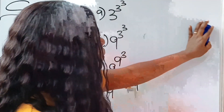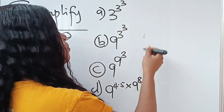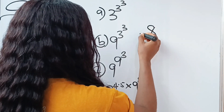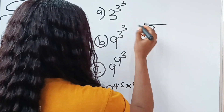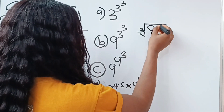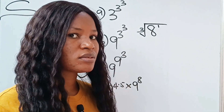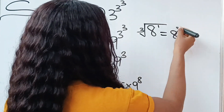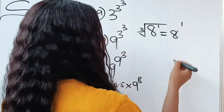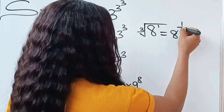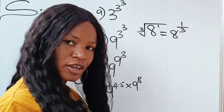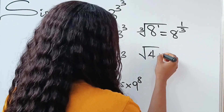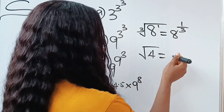Let's do some practical simple examples before we go to the complex one on the board. For example, the cube root of eight — we know this is the same as eight to the power of one, so we can rewrite this as eight raised to the power of one over three. This one is our numerator and the three is our denominator.